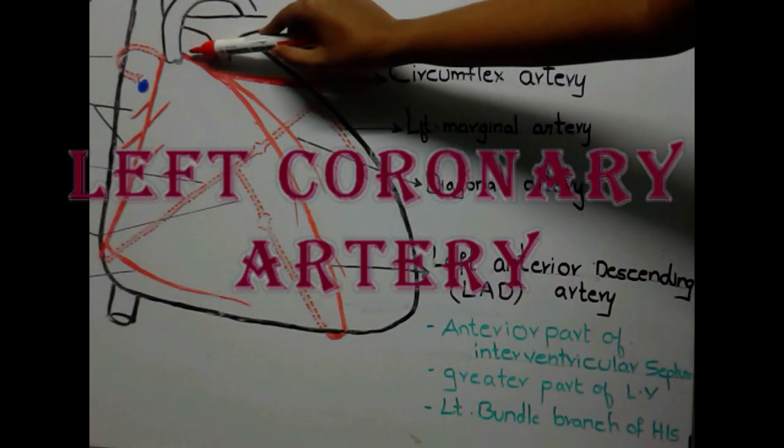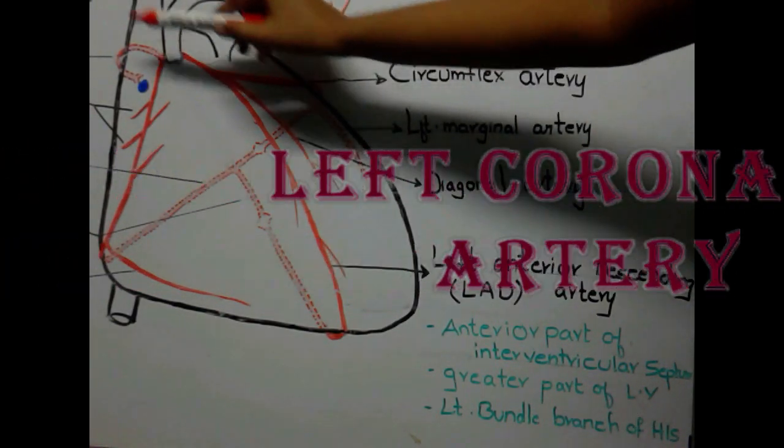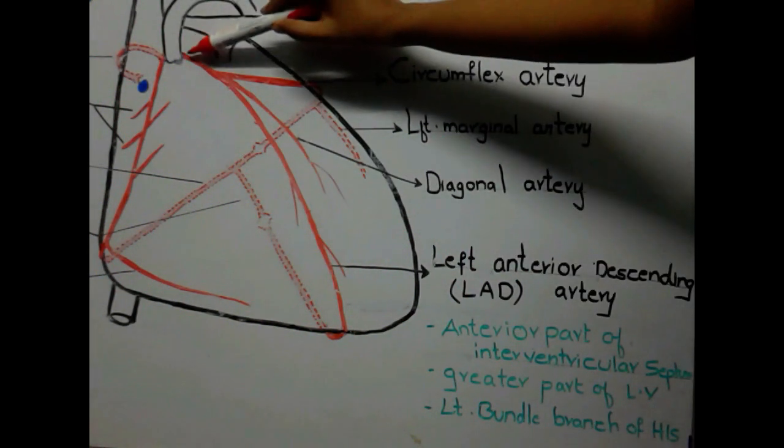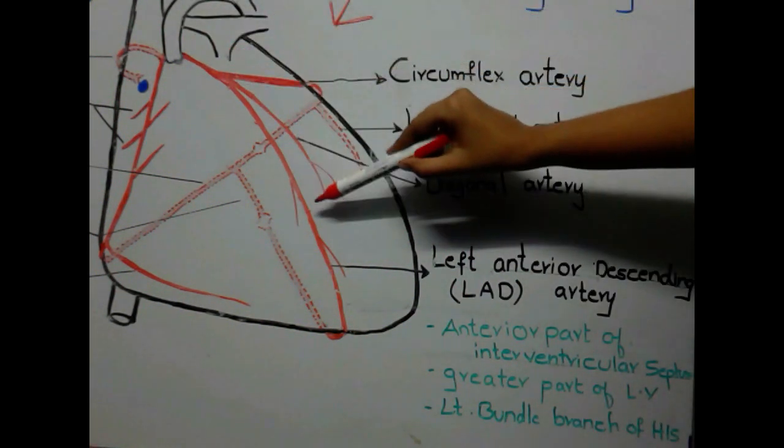It starts just above the aortic wall, the same origin as that of right coronary artery. It starts and it gives two main branches.